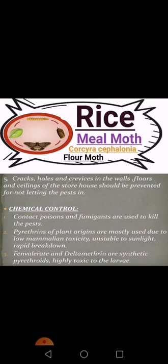For chemical control, contact poisons and fumigants are used to kill the pests. Pyrethrins from plant sources are mostly used due to low mammalian toxicity, instability to sunlight, and rapid breakdown. Synthetic pyrethrins such as phenylvalerate and deltamethrin are highly toxic to the larva and can kill it completely, ensuring preservation of grains.